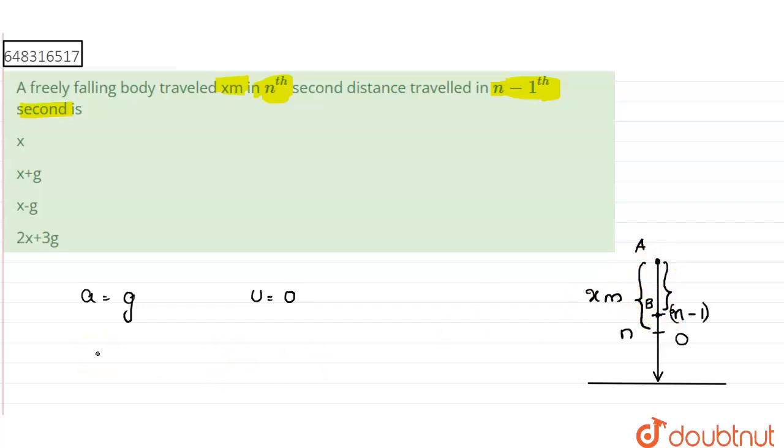Now, the distance traveled in the nth second for a uniformly accelerated body is given by S_n equals u plus a into n minus half. Where u is the initial velocity, a is the acceleration, n is the second at which the distance has to be found out.